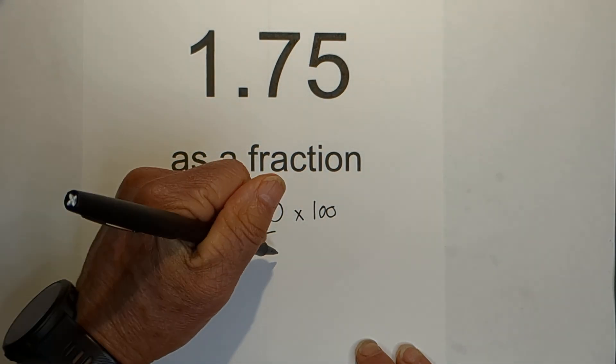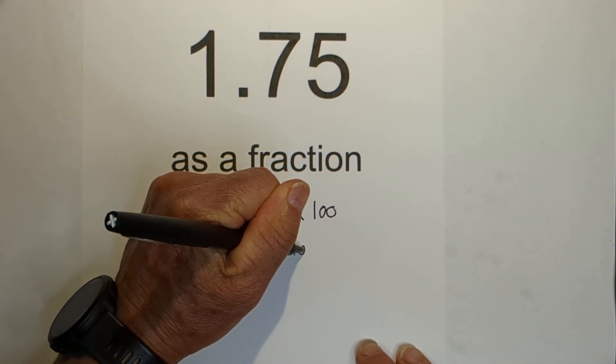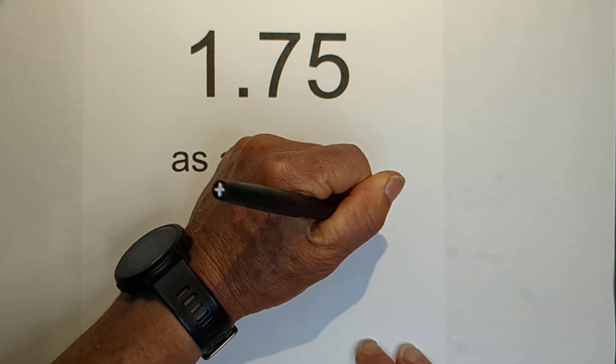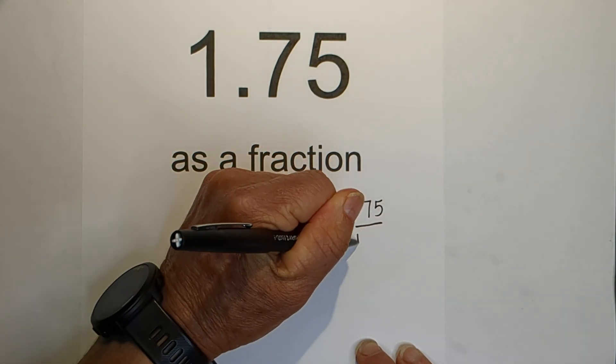What we do to the numerator, we need to do to the denominator. 1.75 times 100 is 175, and 1 times 100 is 100.